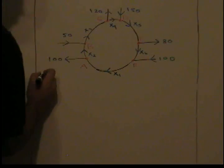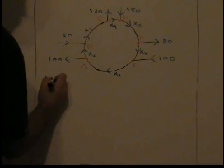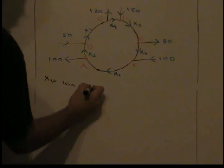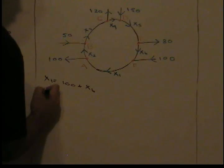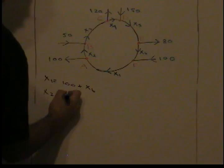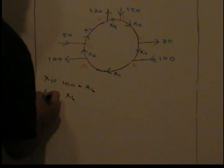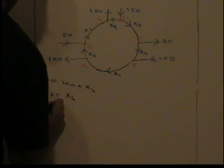So we're gonna say x sub one equals 100 plus x sub six. X two equals x sub six. So looks like x6 is our free variable. It's our linearly dependent column, that's why we're not getting a solution for it.